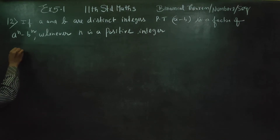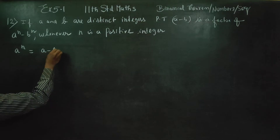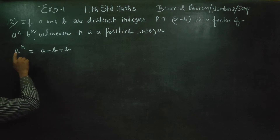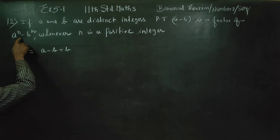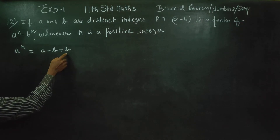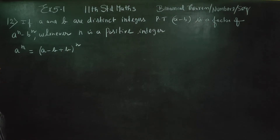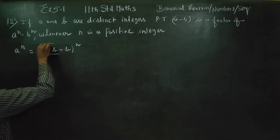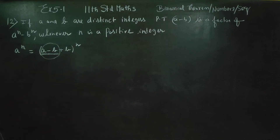I am going to start with A power N. A power N can be written as A minus B plus B. A minus B style — A minus B is a factor of A power N. Now, A minus B is a factor of A power N. Plus B is a factor of A power N — apply binomial theorem.